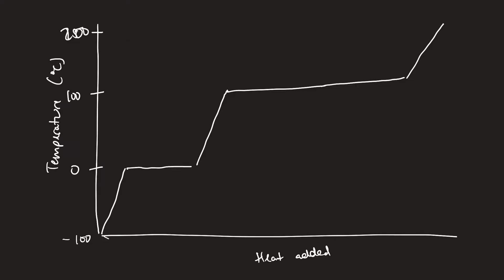Another way we can look at this is by looking at what we call a heating curve. A heating curve basically shows the relationship between the amount of energy added to a substance and the temperature. Different segments of the curve give you qualitative data about what's going on with that substance at that particular moment. For example, this very first line here represents that the substance is in a solid form.